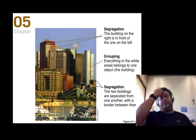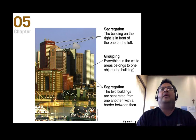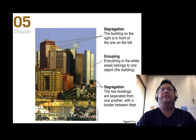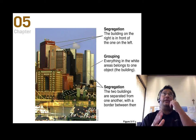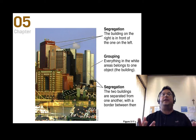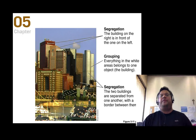Some of the concepts the Gestalt movement introduced were these ideas that we have built-in mechanisms for perceiving the world. We have processes in our perceptual system that help us to break down the external world and make it more organized and predictable.